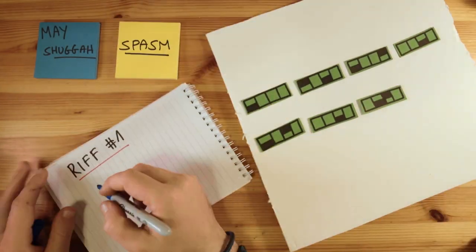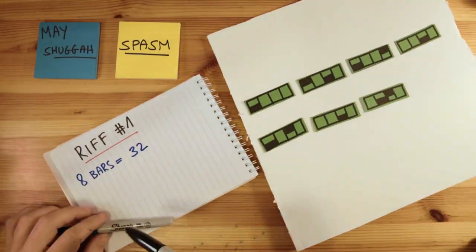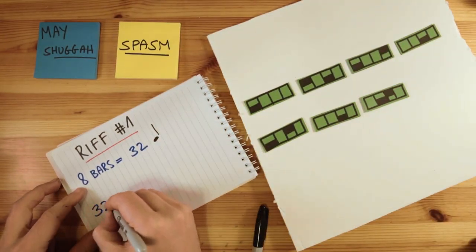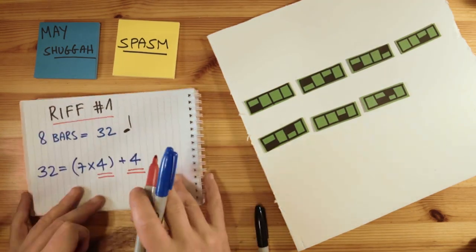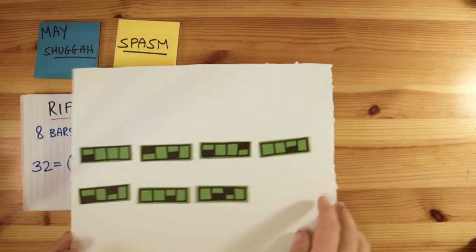So if our frame is eight bars, that means 32 main beats, which also means we can fit our seven beat phrase four times, plus a four beat remainder.